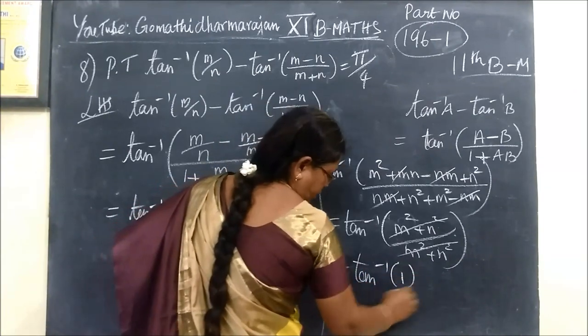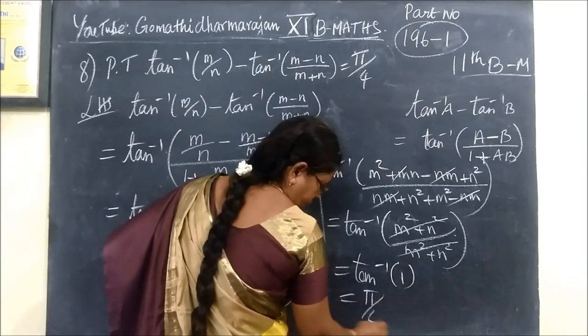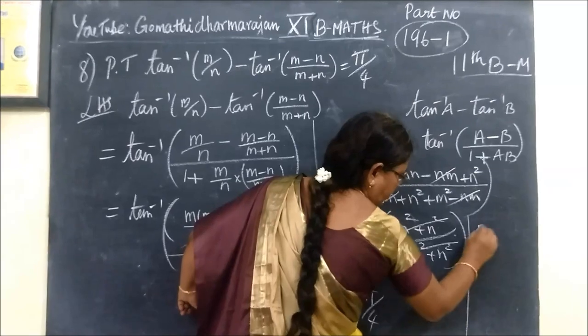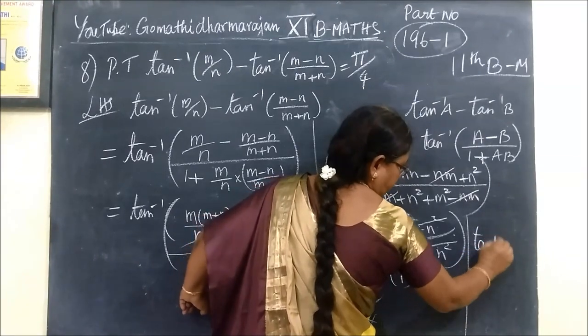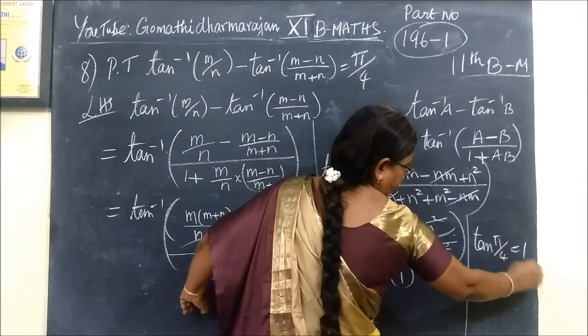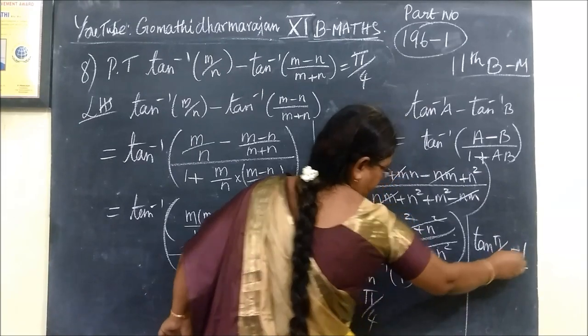This is the ratio of tan. So tan inverse of 1 is equal to pi by 4, because tan pi by 4 is 1. So in this video, question number 7 and 8 for 11th student.